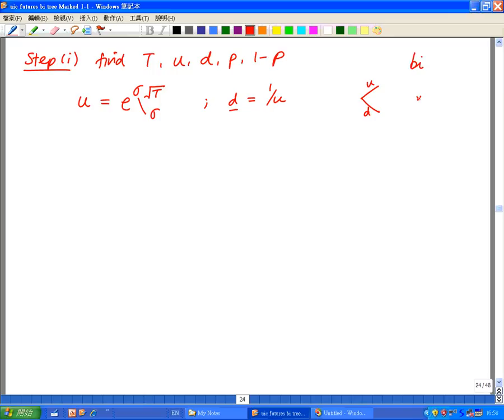meaning at each time node, we have two possible stock price movements. The stock price either go up or the stock price will go down. There's only two possible paths. So here, for the u, it will be e to the power volatility times square root of time, or t.